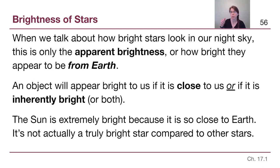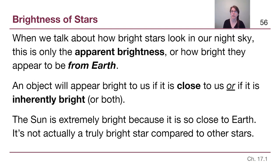Imagine a small penlight on a keychain. If someone is shining that right in your eye it will look extremely bright, but if they are down the hallway from you it won't look that bright at all. On the other hand, a huge spotlight at a theater will look extremely bright even if you are kind of far away from it. The reason the Sun outshines all the stars in our sky is because it is so close to Earth compared to all the other stars — it is not actually all that bright a star when we compare it to all the possible stars out there.